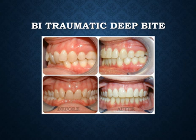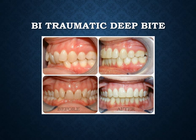Traumatic deep bite is usually seen in some Class 2 Division 2 malocclusions with minimal overjet. The retroclined maxillary incisors may impinge on the keratinized tissue labial to the mandibular incisors, causing gum recession. At the same time, lower incisors cause trauma to the palatal mucosa, and the upper incisors impinge on the labial keratinized mucosa. Therefore, it is called traumatic bite.